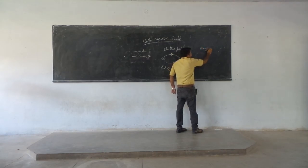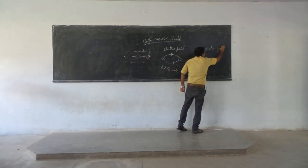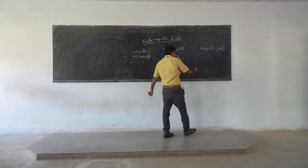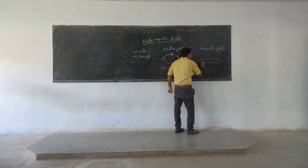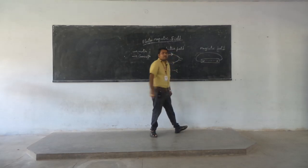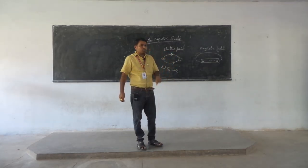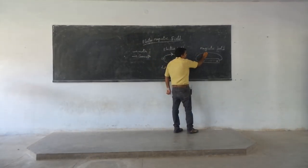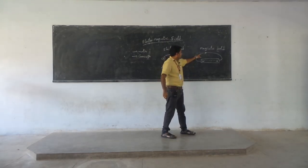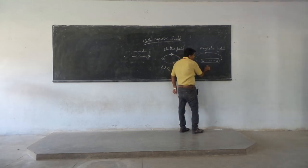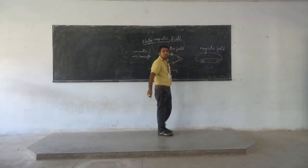Now coming to the magnetic field — how is the magnetic field generated? The magnetic lines are originating at the north pole, terminating at the south pole, passing through the magnet, and finally terminating back at the north pole only. Because of this, the magnetic lines are represented as a closed loop.